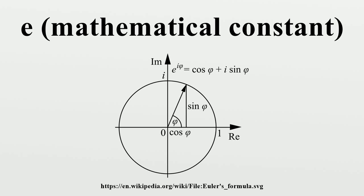The special case with x equals pi is Euler's identity: e^(iπ) + 1 = 0, from which it follows that, in the principal branch of the logarithm, ln(-1) = iπ. Furthermore, using the laws for exponentiation, (cos φ + i·sin φ)^n = cos(nφ) + i·sin(nφ), which is de Moivre's formula. The expression cos φ + i·sin φ is sometimes referred to as cis.